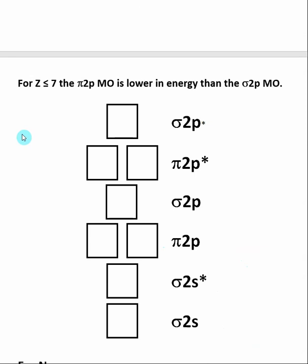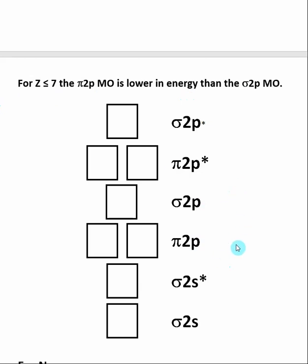When both elements in our diatomic molecule have a Z value less than or equal to 7, the pi 2P molecular orbital is actually lower in energy than the sigma 2P molecular orbital — so these two change positions. It is very important to understand the Z values because this will have an effect on the molecular orbital diagram.